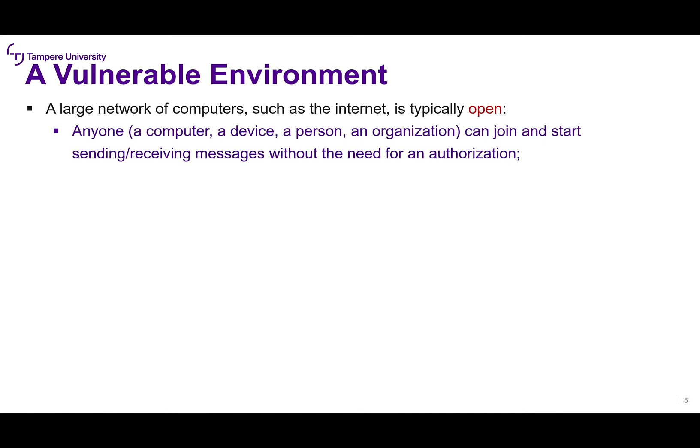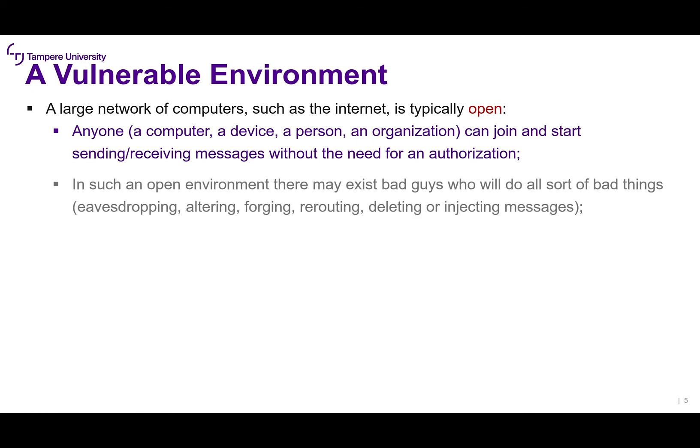A vulnerable environment — something we've already seen in lecture 1 about the threat models. A large network of computers such as the internet is typically open, which means that anyone — a computer, a device, a person, or an organization — can join that network and start sending and receiving messages without the need for authorization. In such an open environment, there may exist bad guys who will do all sorts of bad things like eavesdropping, altering messages, forging messages, rerouting, deleting, or injecting fake messages.